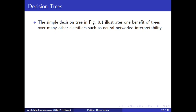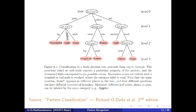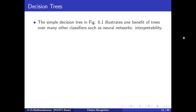The simple decision tree illustrates one benefit of trees over many other classifiers, such as neural networks: interpretability. You can have good interpretability with decision trees, but this is not the case with neural networks — we can't have a clear interpretation of what's going on inside neural networks.